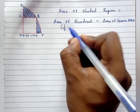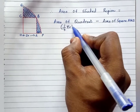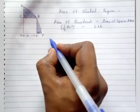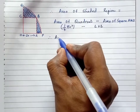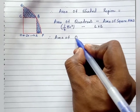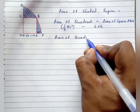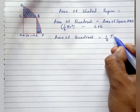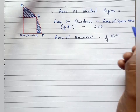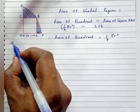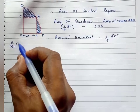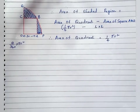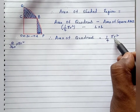Area of quadrant is 1/4 times the area of circle, that is 1/4 into pi r square. Area of square is length into length. Area of quadrant equals 1/4 times pi r square, or using the formula theta by 360 into pi r square. With theta equal to 90 degrees, 90 by 360 gives 1/4 times pi r square.